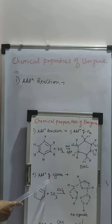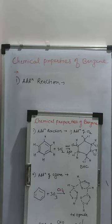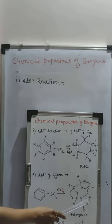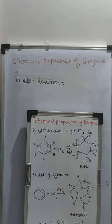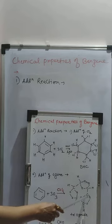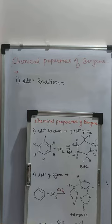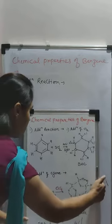The second addition reaction is addition of ozone. When benzene is treated with ozone in the presence of carbon tetrachloride (CCl4), benzene triozonide is formed. This is a two-step reaction: in the first step benzene triozonide is formed, and then this triozonide, upon decomposition with zinc and water, gives glyoxal — also called ethanedial — with elimination of hydrogen peroxide (H2O2).